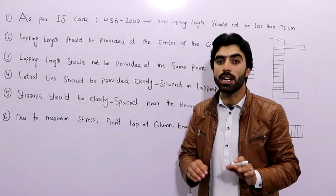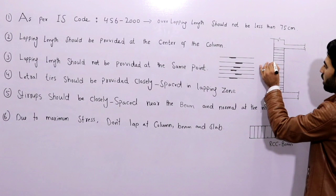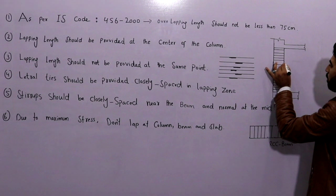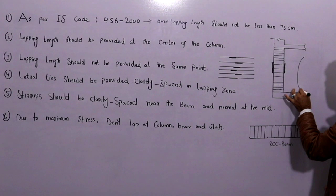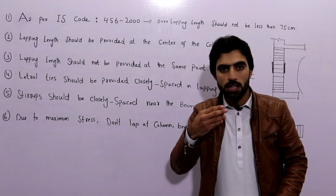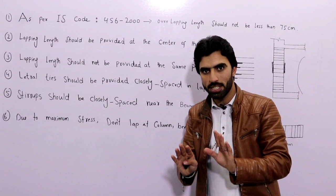The third point: lapping length should not be provided at the same point. If there are four or six bars in a column and you provide the lapping length at the center but all at the same point, it may cause buckling. The column could deform. So we have to provide lapping length at the center of the column, but not at the same point — it should be staggered at different points.